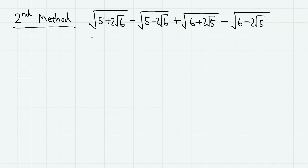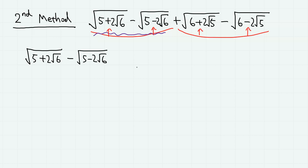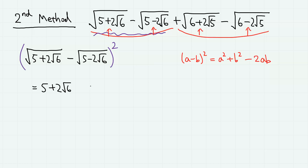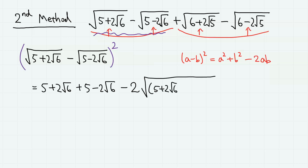Now for the second method. The idea comes from the fact that we have pairs of nested radicals with opposite signs. Let's take a look at the first half and square the whole thing. We apply the formula (a - b)² = a² - 2ab + b². So we have (5 + 2√6) + (5 - 2√6) minus 2 times the square root of (5 + 2√6)(5 - 2√6). The 2√6 terms cancel out, giving us 10 minus that product term.